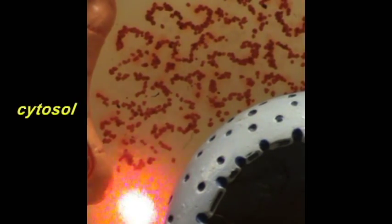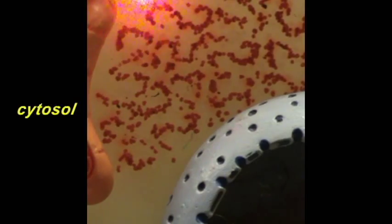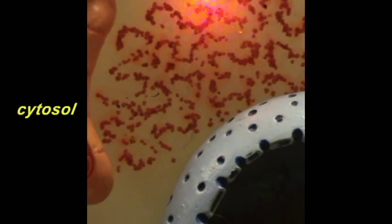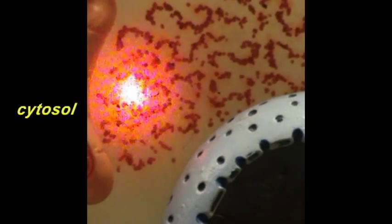This amorphous background that you see here represents what is called the cytosol. The cytosol is basically a very viscous gel-like substance which at this magnification is filling up the contents of the cytoplasm.